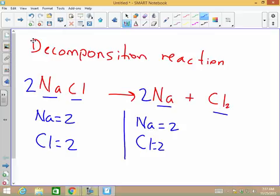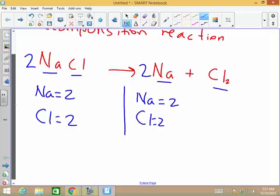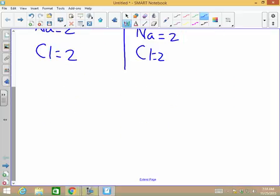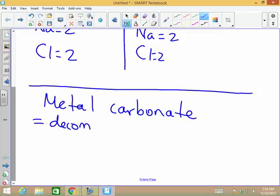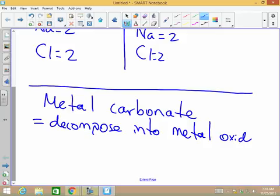If I have to make another decomposition reaction, sometimes it will decompose differently. If I decompose something like a metal carbonate, it's going to decompose into metal oxide, whatever the metal is, plus CO2.